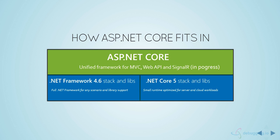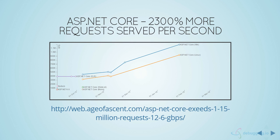ASP.NET Core is a unified framework for MVC, Web API, and SignalR — though SignalR is not part of RC2 as of now but will be added. ASP.NET Core can run on .NET Framework 4.6 and on .NET Core 5. The runtime, stacks, and libraries are all open source. If you port your application to ASP.NET Core, you can run it on any OS using various IDEs. So why was a new framework written instead of just updating ASP.NET 4.6?